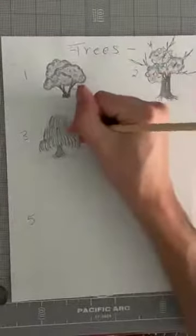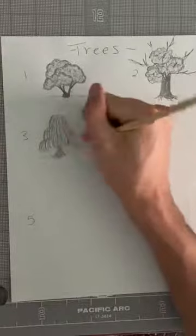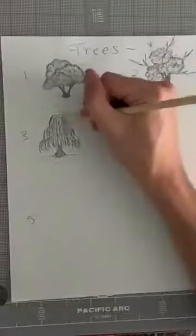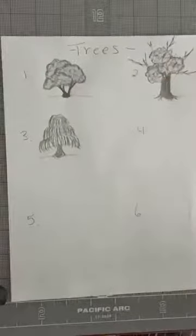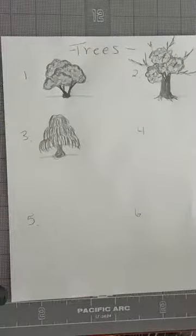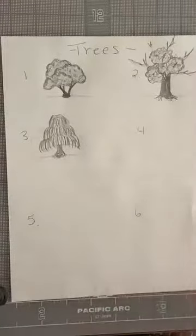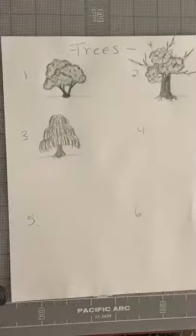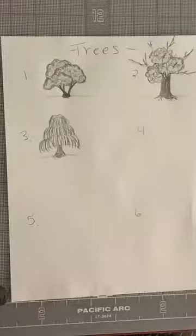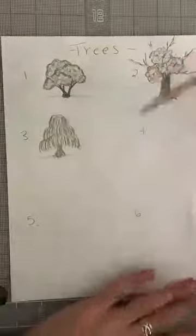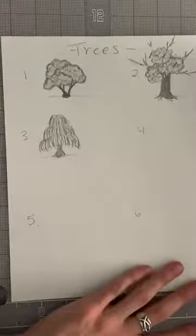And of course you could keep layering and layering and layering if you had colors or wanted to do something like that. But now we have a willow tree which if you've ever seen them, they have the little very long limbs with huge, long kind of like a chain of leaves that just kind of blow in the wind. So that's a willow tree.